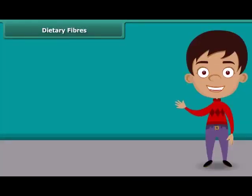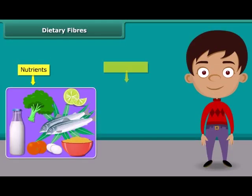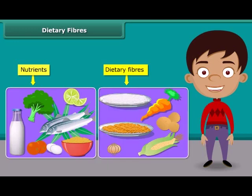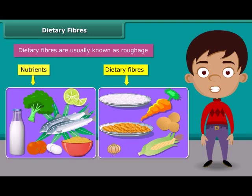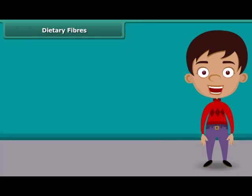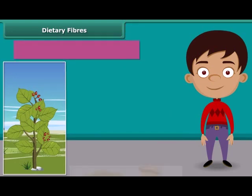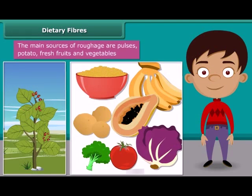Dear friends, do you know that besides nutrients, dietary fiber also plays an important role in our body. They are usually known as roughage. Roughage does not provide any nutrition to our body but adds bulk. They are found only in plants — pulses, potato, fresh fruits and vegetables are the main sources of roughage. This helps our body to get rid of the undigested food.